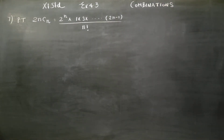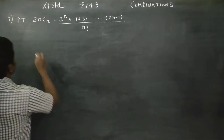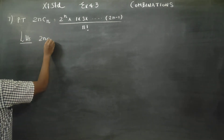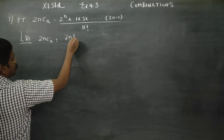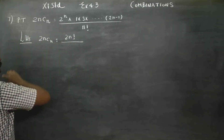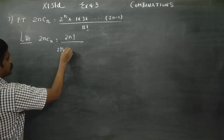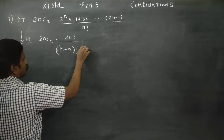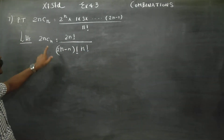Hello Learn Standard Students, in problem number 7, I am starting my LHS. My LHS is 2nCn. What is the NCR formula? N factorial by N minus R factorial into R factorial. This is my NCR formula.